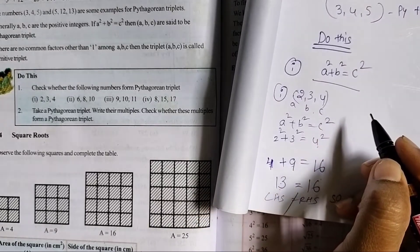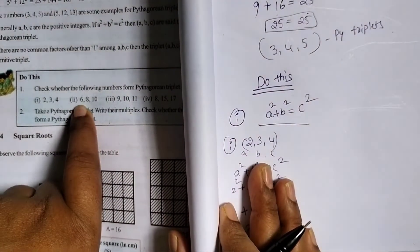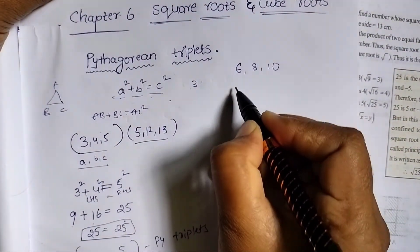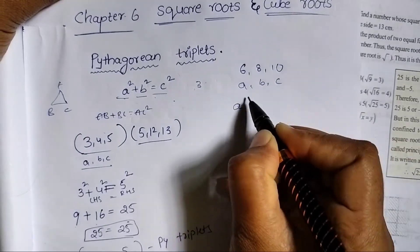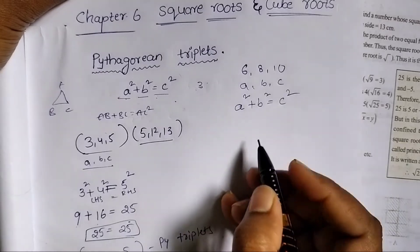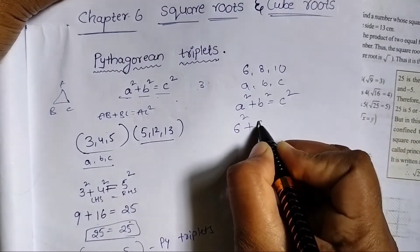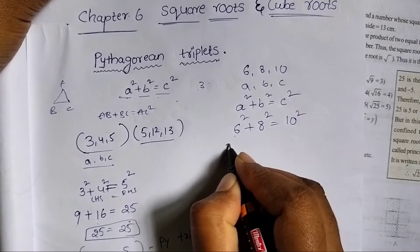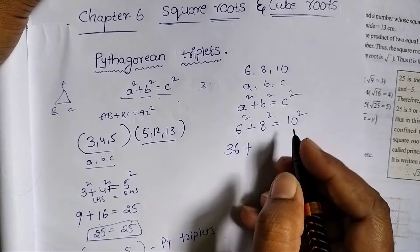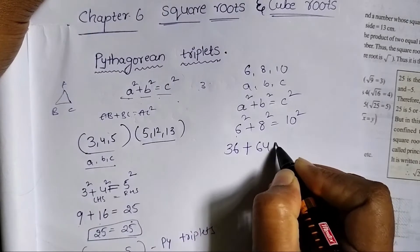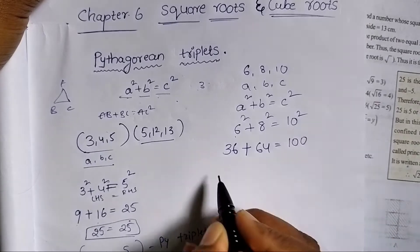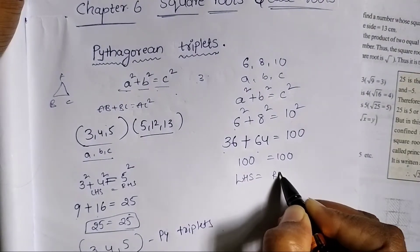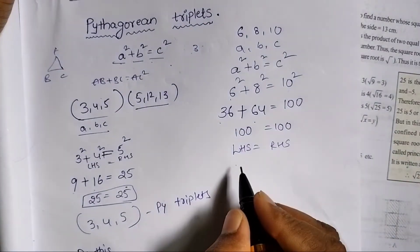Second question: 6, 8, 10. A square plus B square is equal to C square. 6 square plus 8 square is equal to 10 square. 6 into 6 is 36, plus 8 into 8 is 64, equals 10 into 10 which is 100. 36 plus 64 equals 100. LHS is equal to RHS. Condition satisfied. So 6, 8, and 10 are Pythagorean triplets.